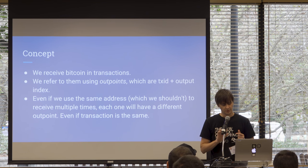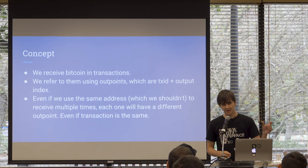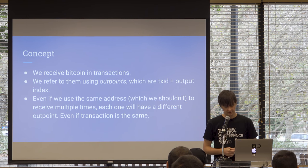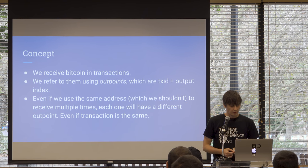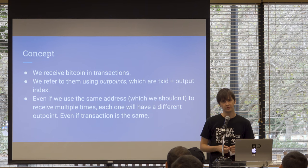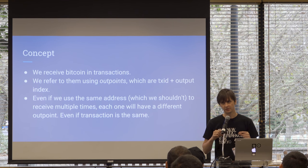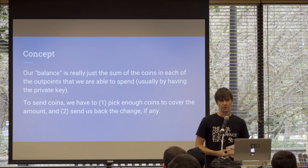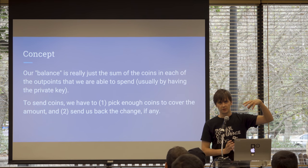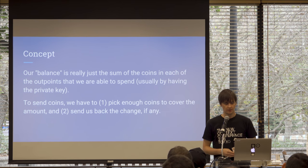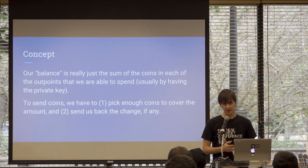All of these coins, we refer to them using outpoints, which is basically just the ID of the transaction they're in and the index inside of that transaction. We talked about that yesterday — I think Jimmy Song mentioned it, or John Newberry, or both. So even if we use the same address (which we shouldn't), and even if we receive multiple times inside the same transaction, each of these coins will have a different outpoint. The balance that we have in our wallets is basically just a list — we take all of the coins that we have that we can spend and add up all of their values. That's our balance. There's no such thing as an account in Bitcoin; it's just a bunch of coins added up, kind of like a wallet.